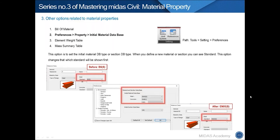The second option is Initial Material Database. Did you know the standard type shown in the material data dialogue can be changed? Using this option, you can set the design code standard that you prefer.